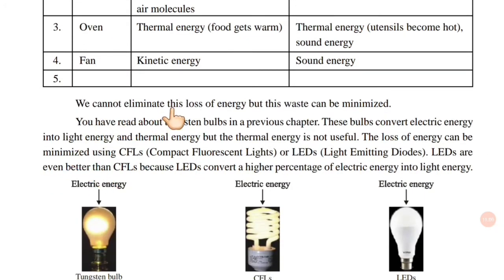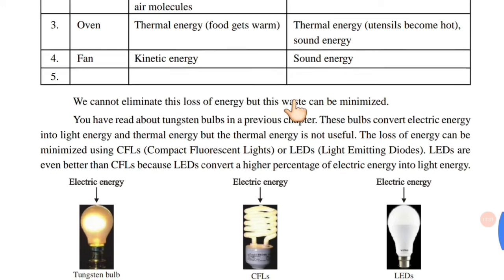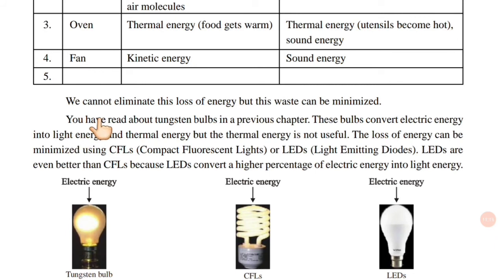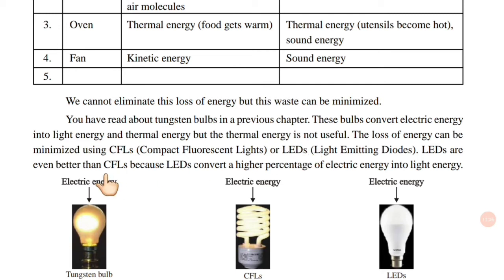We cannot eliminate this loss of energy, but this waste can be minimized. The loss of energy from light bulbs — where electrical energy converts into light energy and thermal energy but thermal energy is not useful — can be minimized by CFLs, compact fluorescent lights.